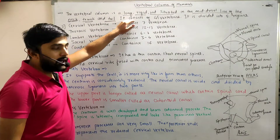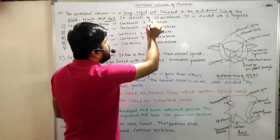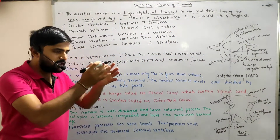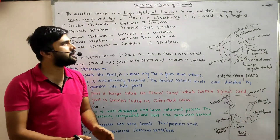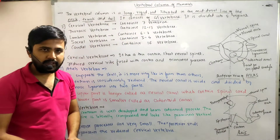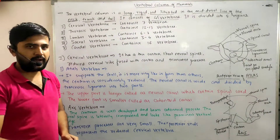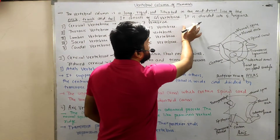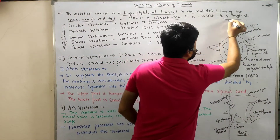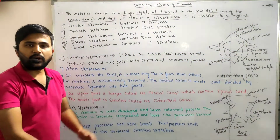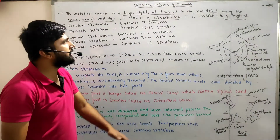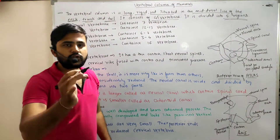The vertebral column of the mammal consists of 45 vertebrae in case of primates. It is divided into 5 regions — the whole vertebral column of the mammals can be divided into 5 regions.